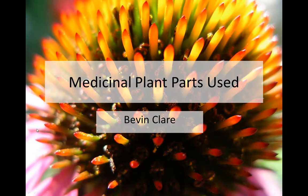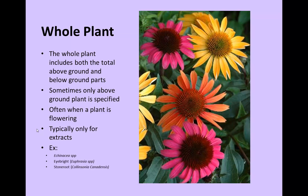Let's take a look at the medicinal plant parts used. The whole plant includes both the above ground and the below ground parts, and is typically harvested when it's flowering. Sometimes only the above ground part is specified, usually for extracts, because of the varying types of plant materials and their different actions under extracting. Typically alcohol extracts and tinctures are what you'll see. Some examples are echinacea, ibrite, and stone root, which have varying types of chemistry in the above ground and below ground parts.